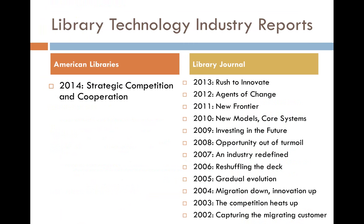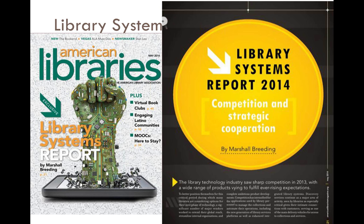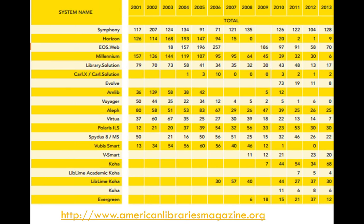Another project I do every year is the Industry Report, previously published by Library Journal and currently published in American Libraries — currently working on the 2015 issue. A lot of the data I use in my presentations is originally published in one of these reports. It includes data tables showing how many systems are sold and implemented by libraries year by year.